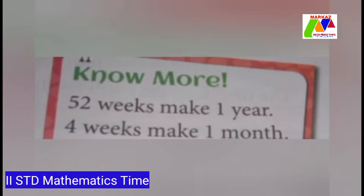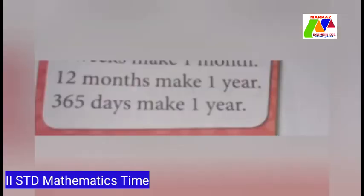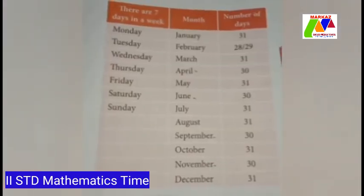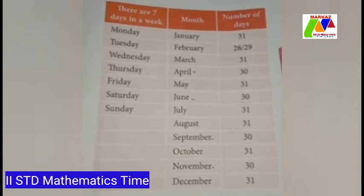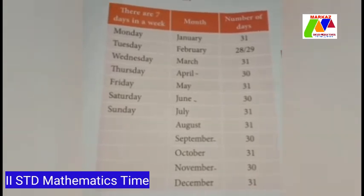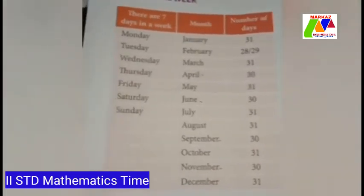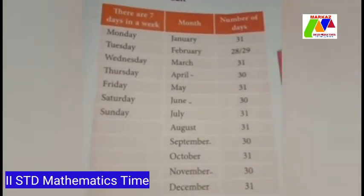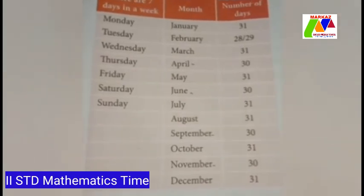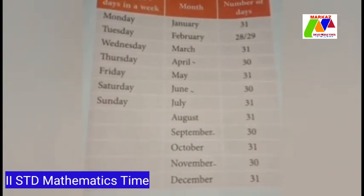4 weeks make 1 month and 52 weeks make 1 year. 12 months make 1 year and 365 days make 1 year. The 12 months are: January, February, March, April, May, June, July, August, September, October, November, and December.